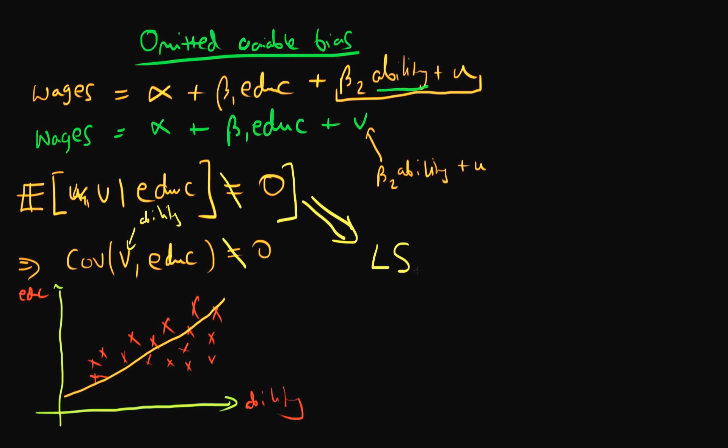Under this violation, it means that least squared estimators of, in this case, beta 1, will be biased.